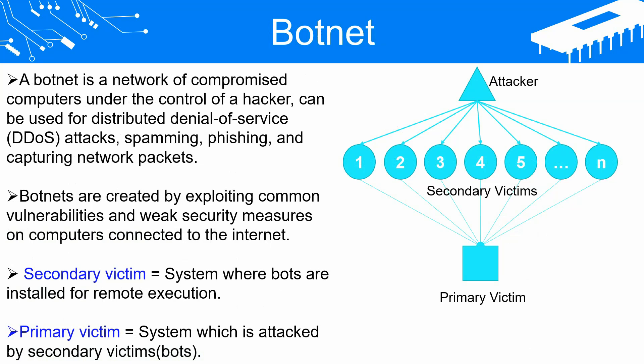Direct control is exercised when the bot-herder transmits commands to individual bots within the botnet. Consequently, bots are programmed to have a listening service that is active on an open port, expecting communication from the bot-herder. Alternatively, indirect control of a botnet can be established through various intermediary communication systems, such as internet relay chat (IRC), instant messaging (IM), email, file transfer protocol (FTP), social media platforms like Facebook, Twitter, blogging, or even the web.